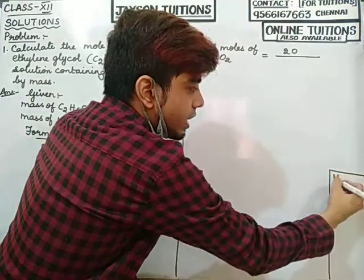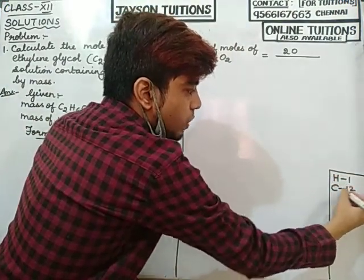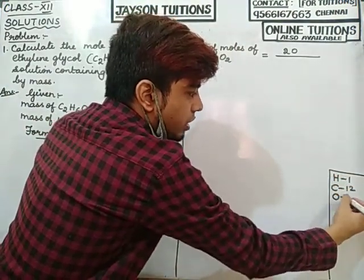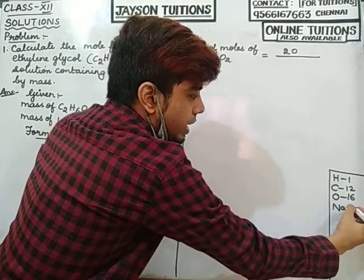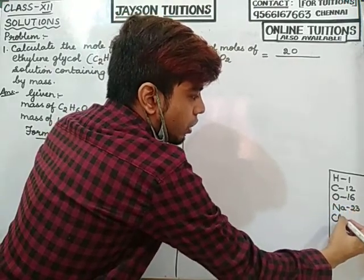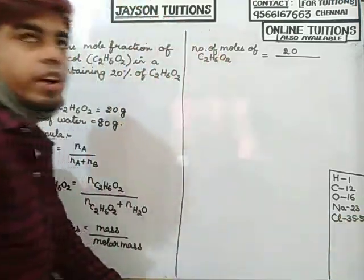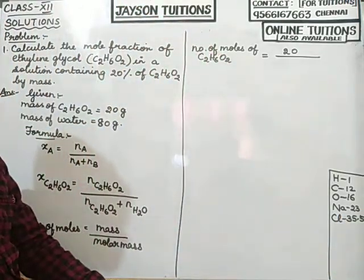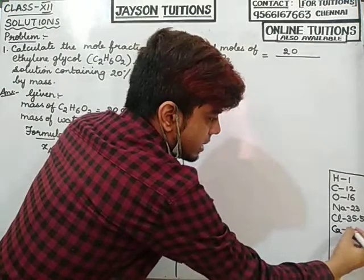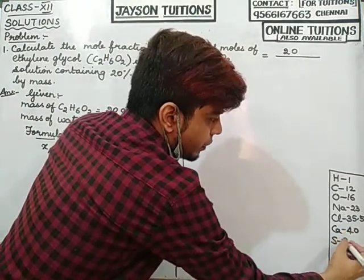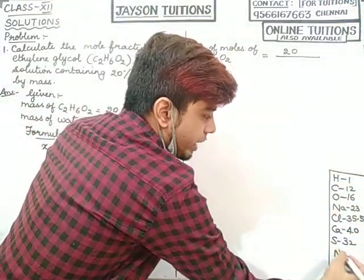Also memorize: calcium is 40, sulfur is 32, nitrogen is 14. Now calculate the molar mass of C₂H₆O₂: carbon is 12 × 2, hydrogen is 1 × 6, oxygen is 16 × 2.